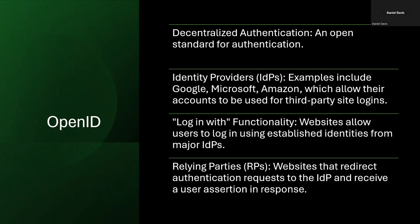OpenID is an open standard for decentralized authentication. When you go to a website and it asks if you want to log in with your Google, Microsoft, or Amazon account, that would be an example of using something like OpenID. Some of the major identity providers include Google, Microsoft, and Amazon. The key takeaway: when you see the 'log in with' functionality, associate that with OpenID. Key acronyms here are identity providers (IDPs) and relying parties (RPs).